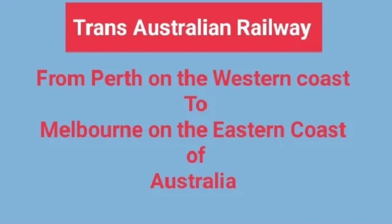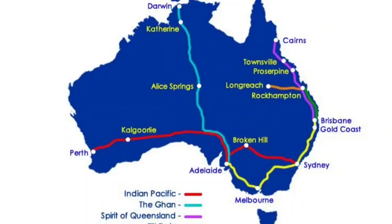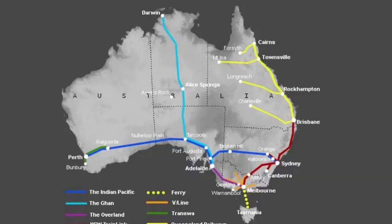The Trans-Australian Railway connects the two sides of the Australian continent in the southern part. It stretches from Perth in the west on the Indian Ocean and goes up to Melbourne via Sydney on the east coast of Australia, connecting the eastern and western sides of Australia.